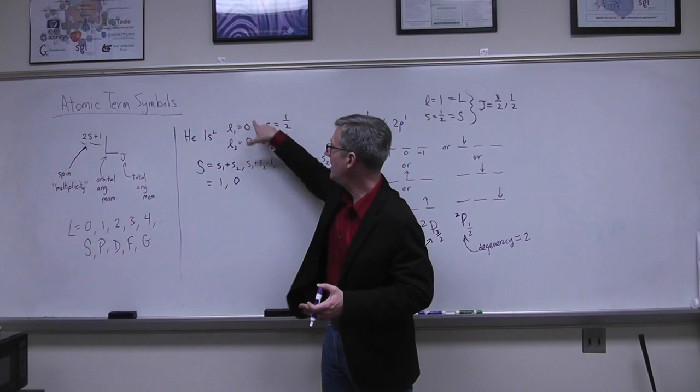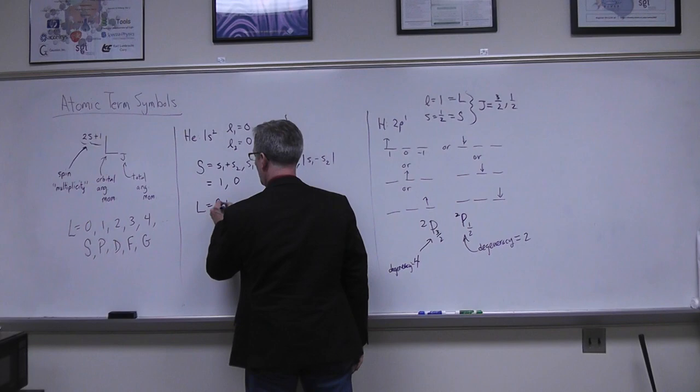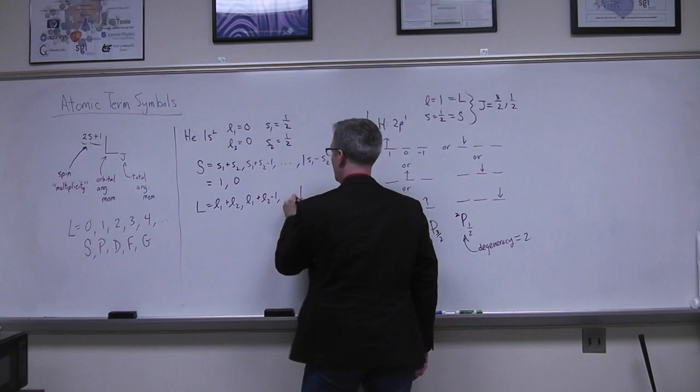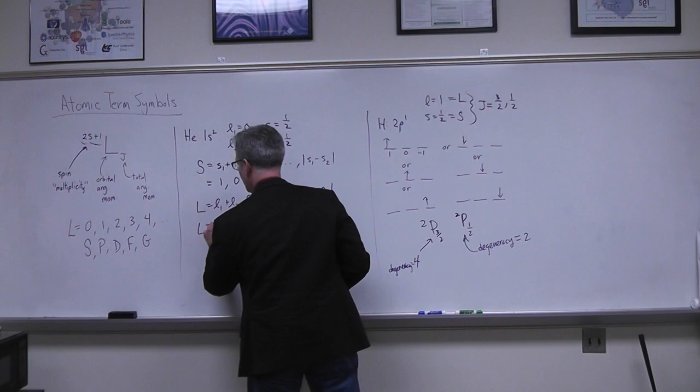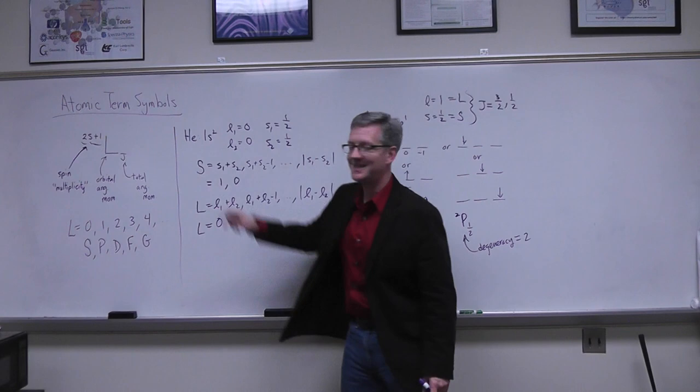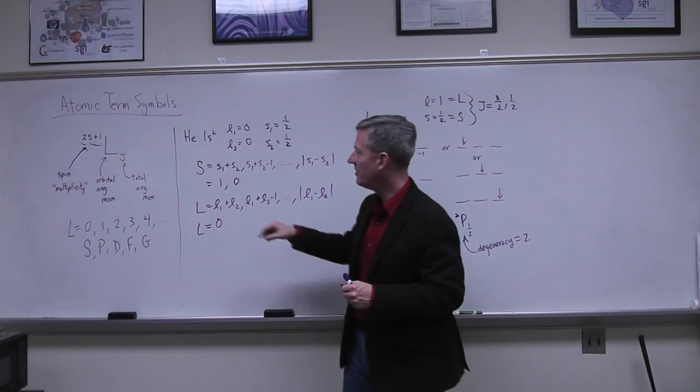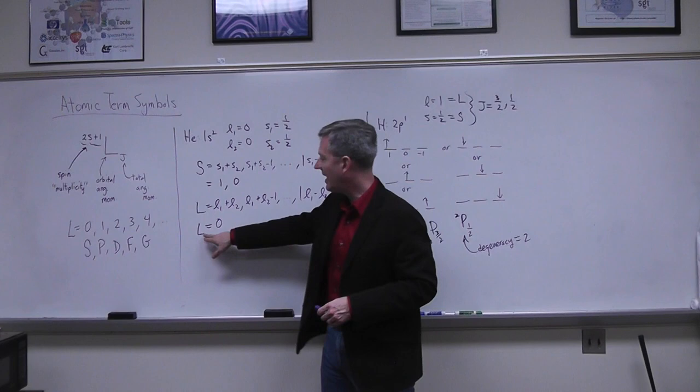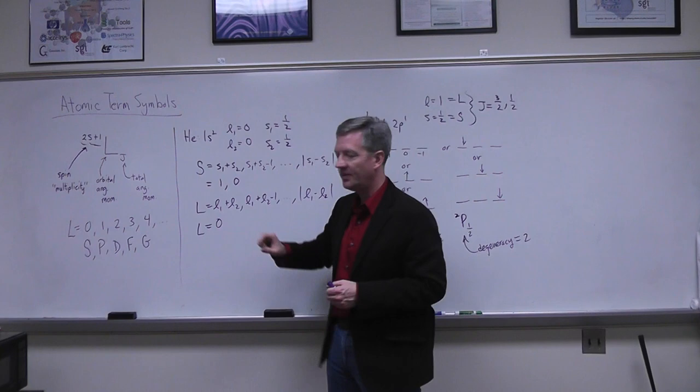Just as little l gives possible m_L values, capital L gives capital M_L values from +L down to −L in integer steps. Similarly, capital M_S ranges from +S down to −S. For a given capital S, I can see that if capital S = 1, then capital M_S can be 1, 0, or −1. Capital M_S is the sum of the individual m_S values for each electron.